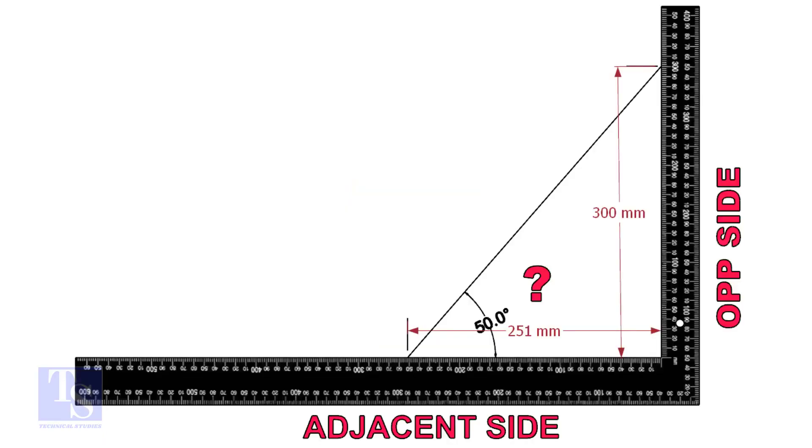Let us learn some TAN rule calculation. TAN of the degree is equal to opposite side divided by adjacent side. For this formula, we know only the TAN degree. Let us assume the opposite side is 300 mm.